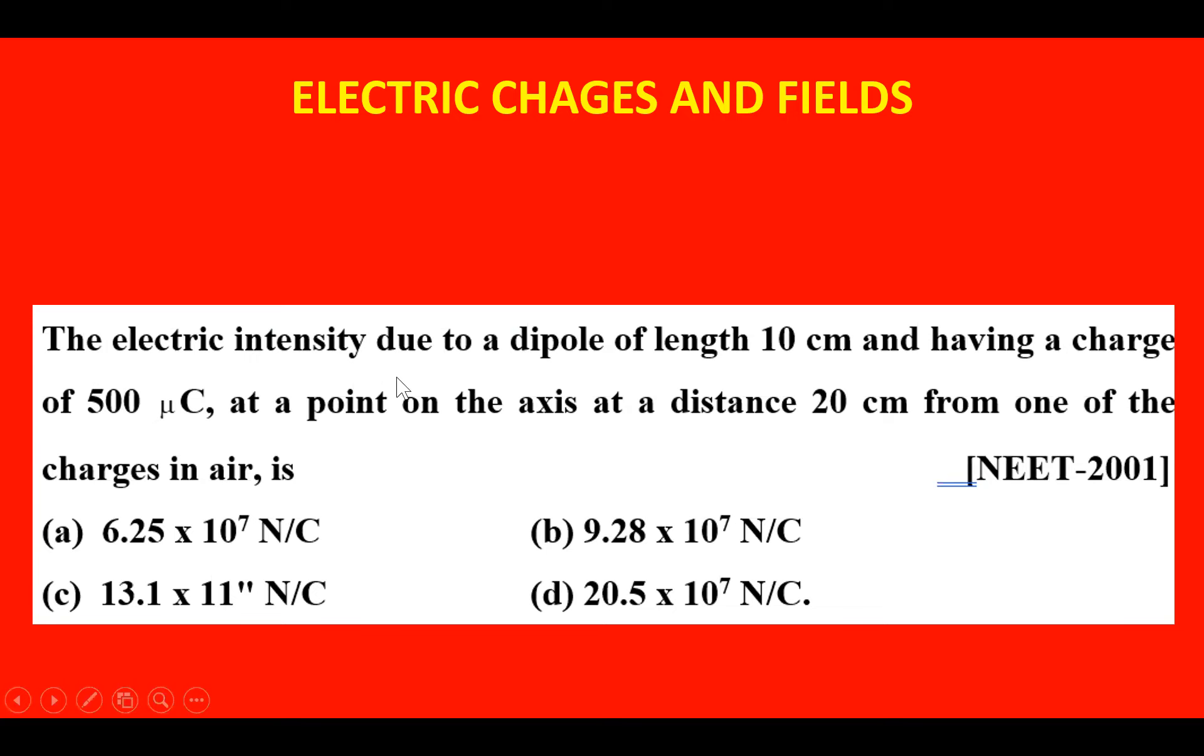The question is: the electric intensity due to a dipole of length 10 cm and having a charge of 500 micro coulombs at a point on the axis at a distance 20 cm from one of the charge in air is how much?